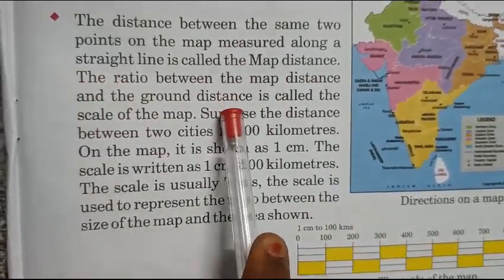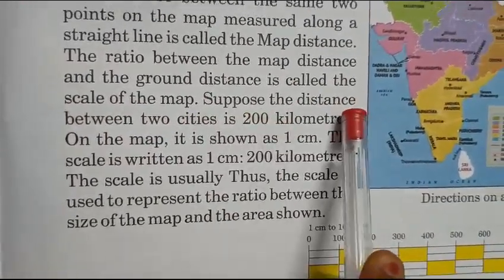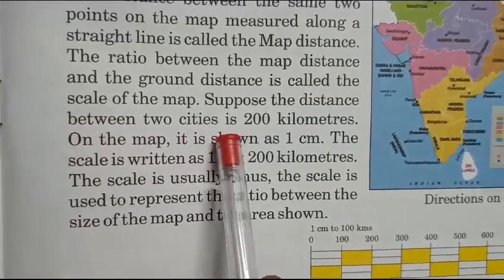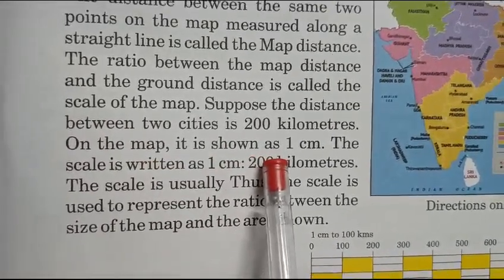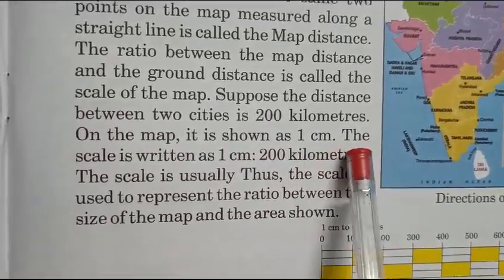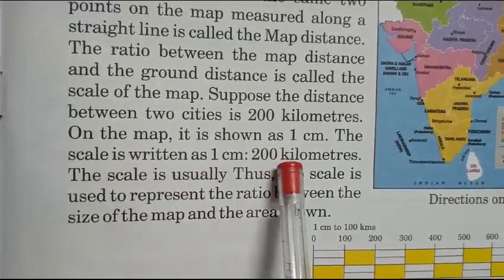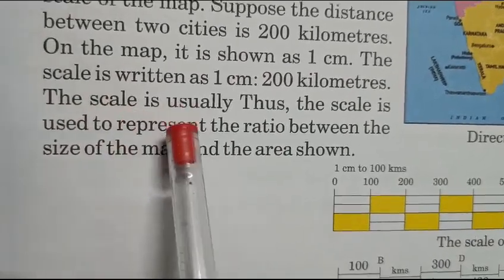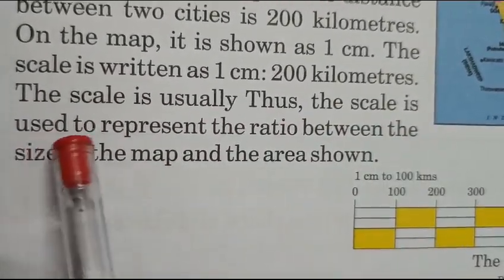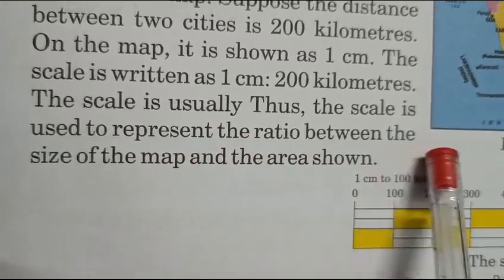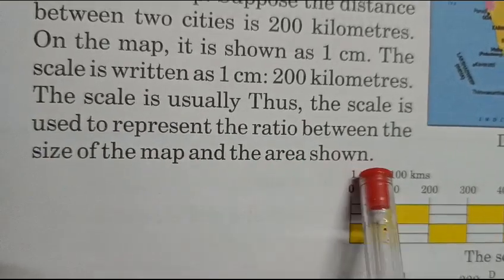The ratio between the map distance and the ground distance is called the scale of the map. Suppose the distance between two cities is 200 km; on the map it is shown as 1 cm. The scale is written as 1 cm to 100 km. The scale is used to represent the ratio between the size of the map and the areas shown.